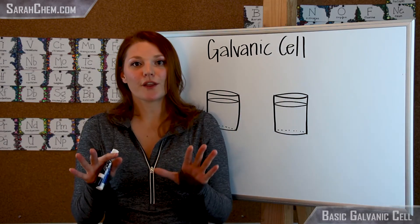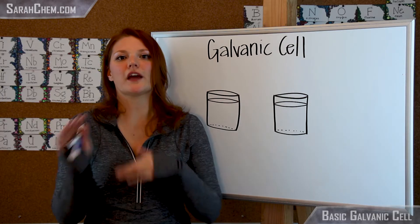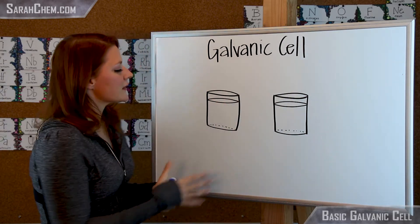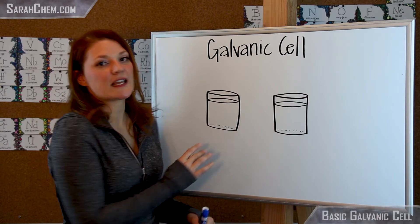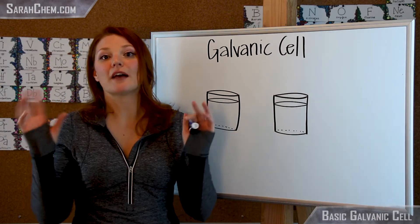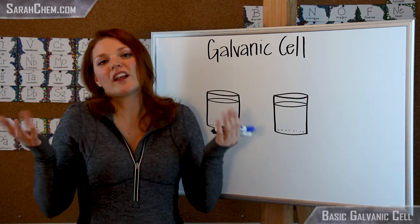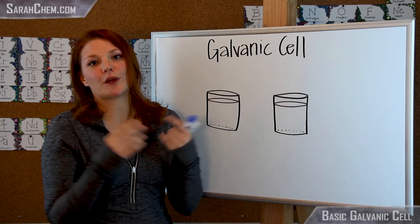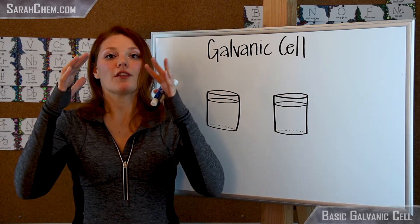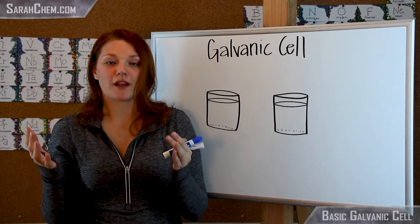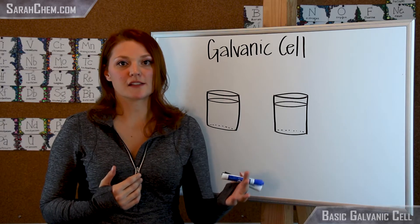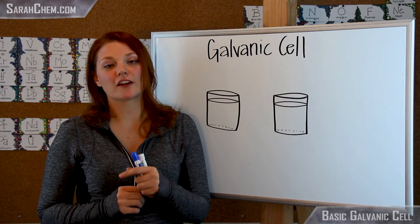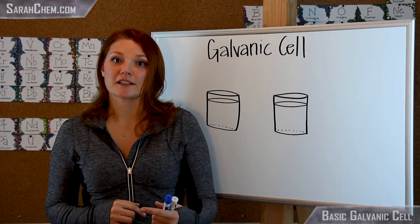In this video I'd like to take a look at the structure and understand how it's put together. We have two separate containers — compartments. In one compartment we're going to have the oxidation reaction, where electrons are lost. In the other compartment we're going to have the reduction reaction, where those electrons are gained.